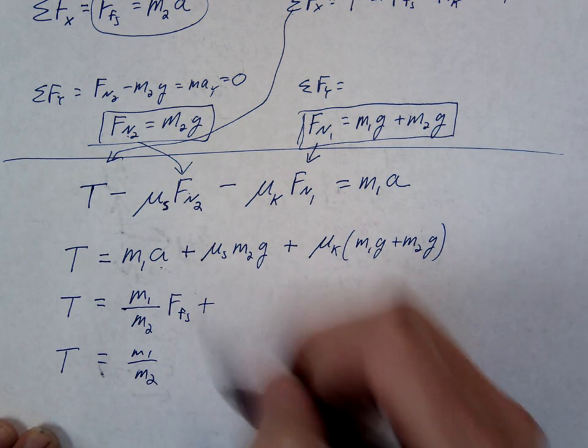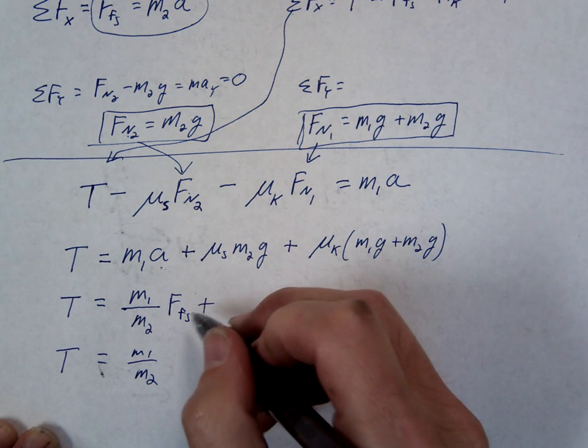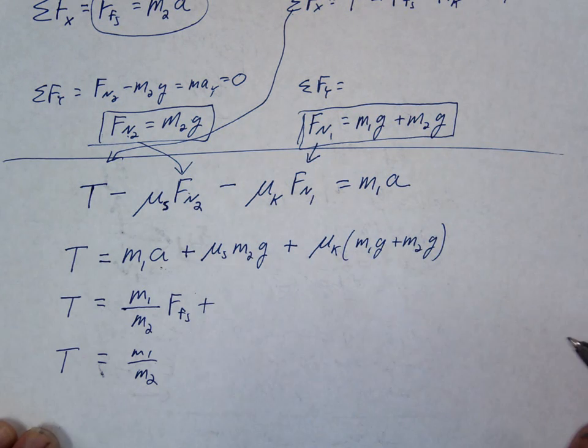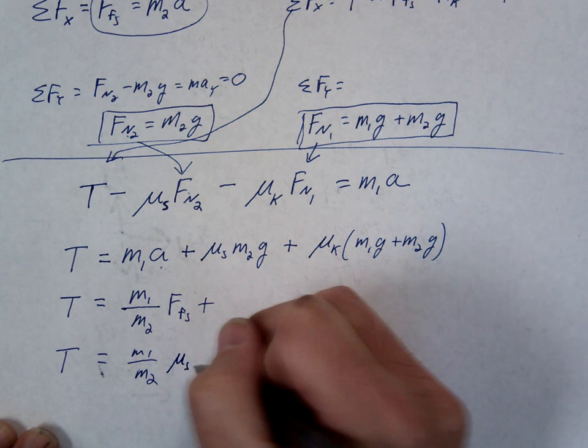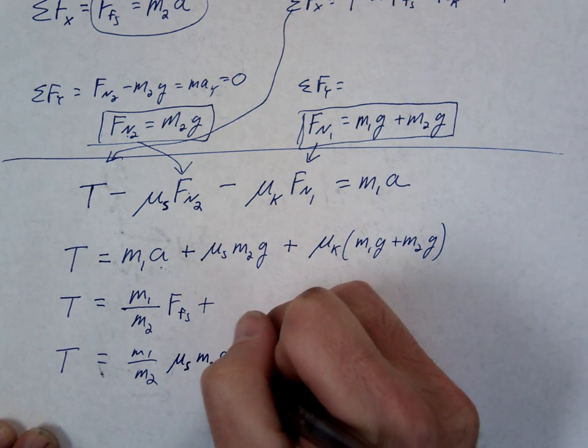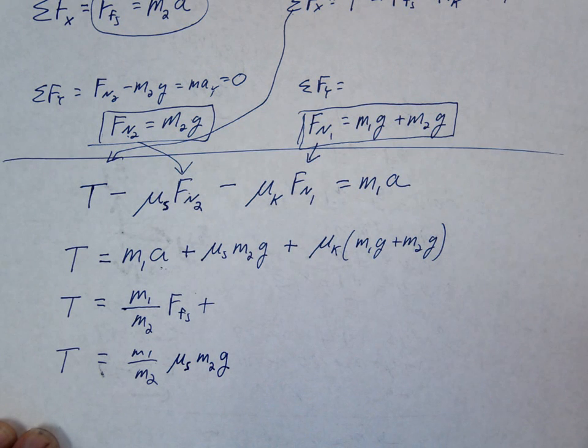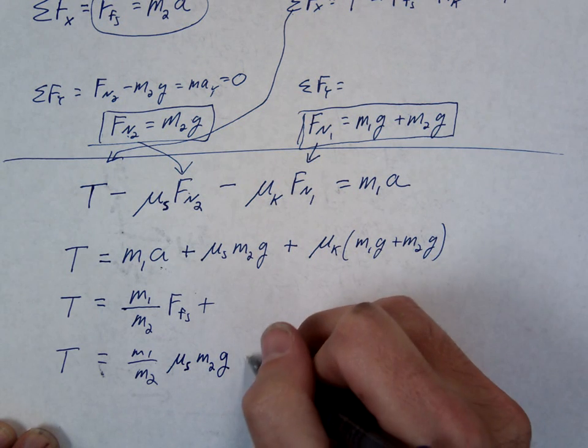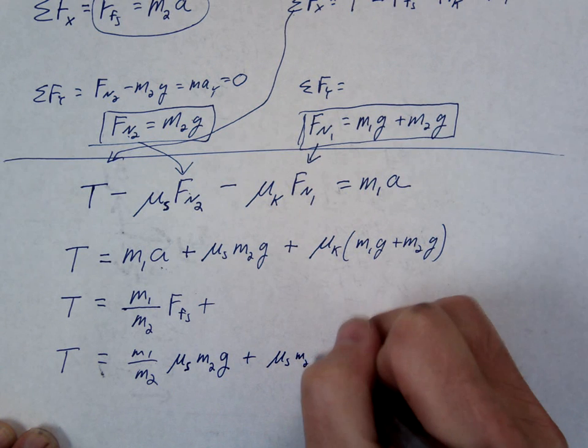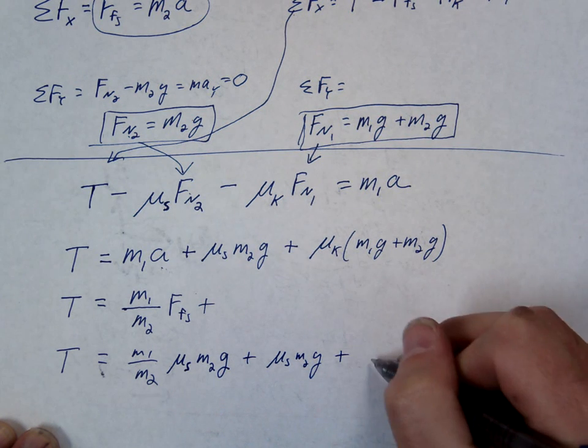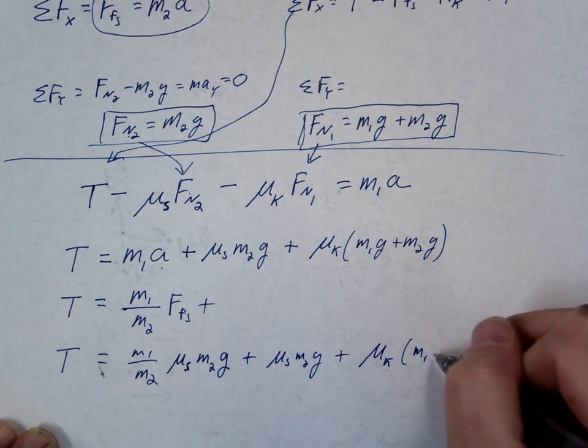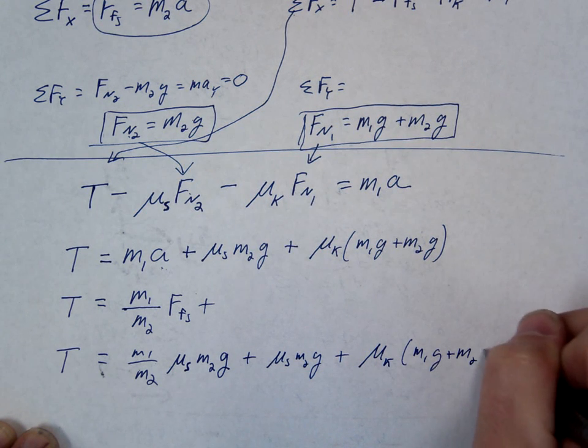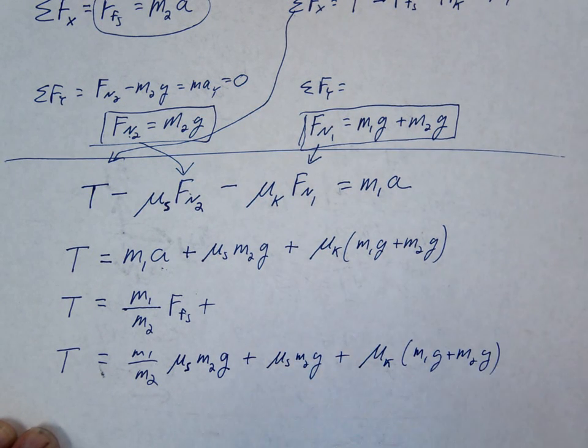Force of friction static, we actually know that, right? That's mu times normal force static, so we already have that. That should be mu static M2g plus mu static M2g. You could simplify that one as well. So mu k M1g plus M2g. Wasn't that fun?